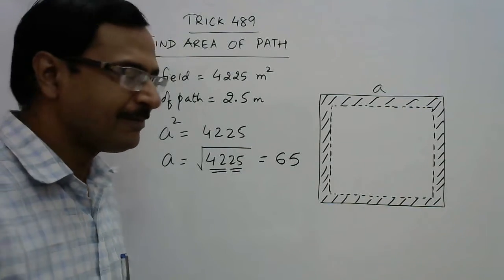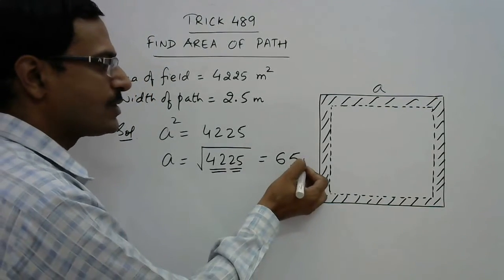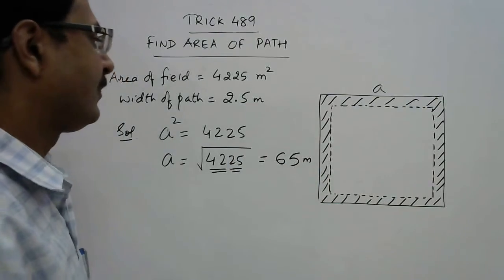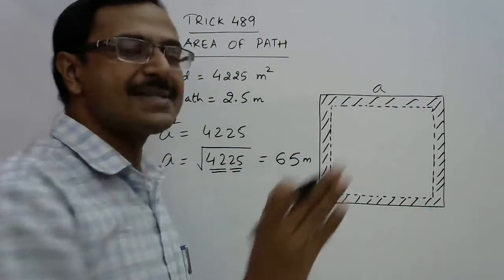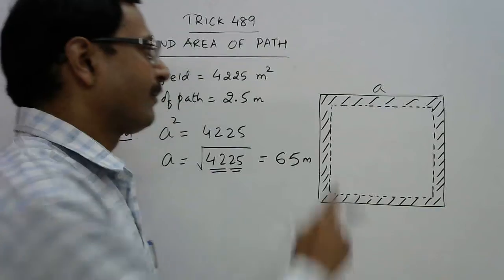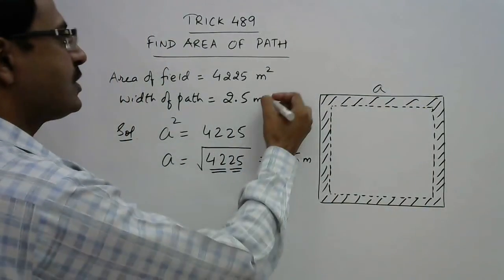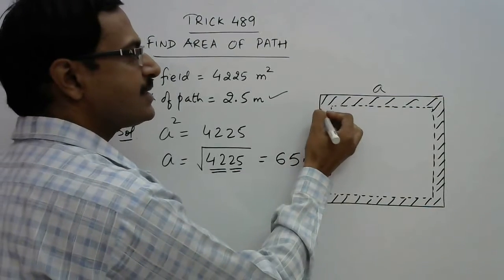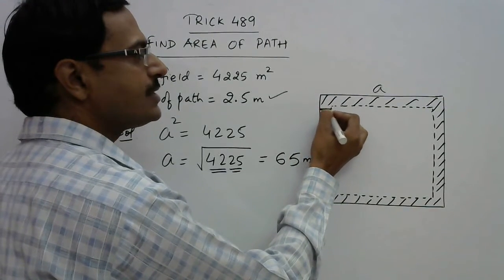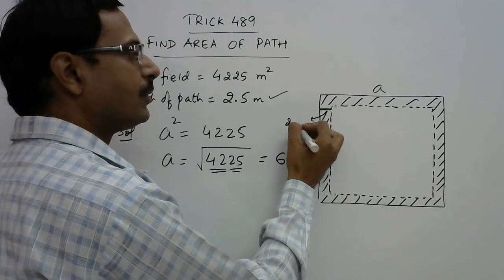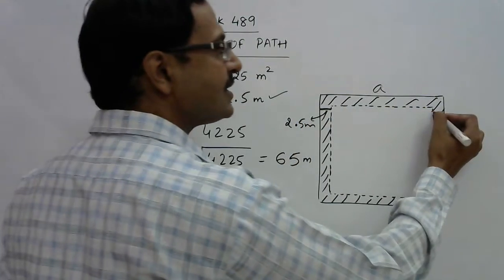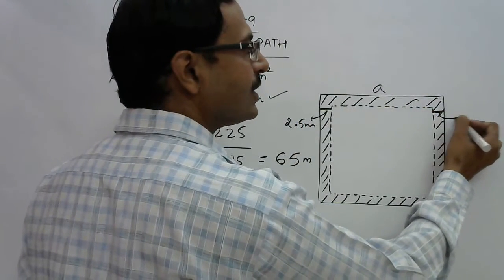Now we have the outer side of the plot. This is 65 meters. Now use the width. See, width is this side also - this is 2.5, and width is this side also - this is also 2.5.